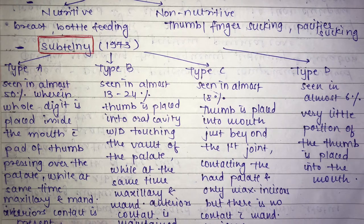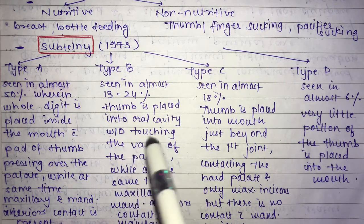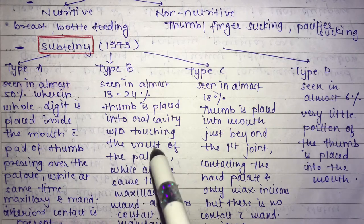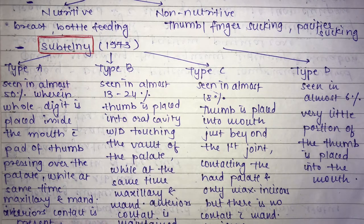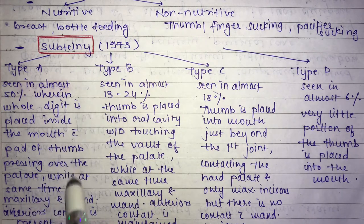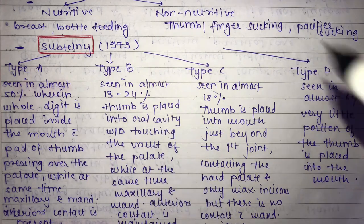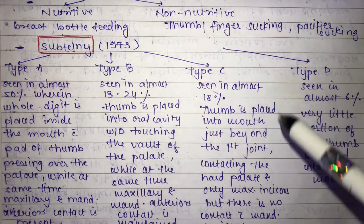Type B is seen in almost 13 to 24% of cases. The thumb is placed into the oral cavity but does not touch the vault of the palate, while maxillary and mandibular anterior contact is maintained. So the key difference from Type A is that the thumb does not press against the palate in Type B.